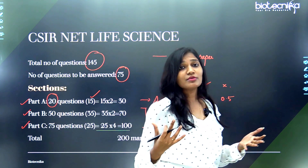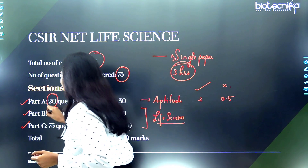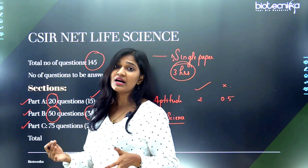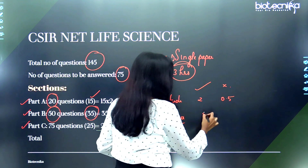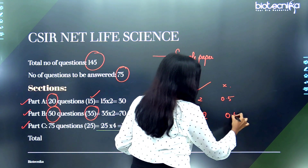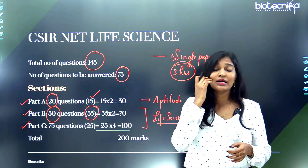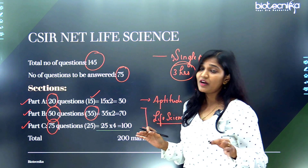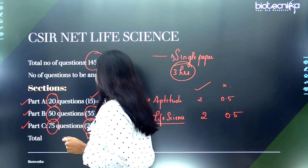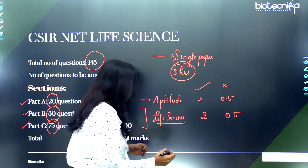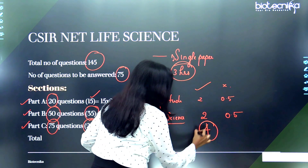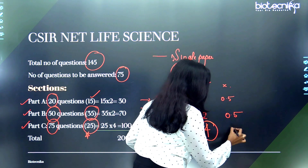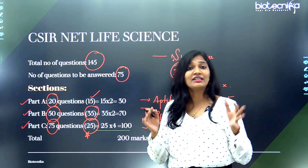Part B has 50 questions, out of which you attempt only 35. Correct answers give you two marks with a 0.5 negative mark. The next and very important section is Part C, which comprises 75 questions, out of which you attempt only 25. For every correct answer in Part C you get four marks, and mistakes carry a one-mark negative penalty.